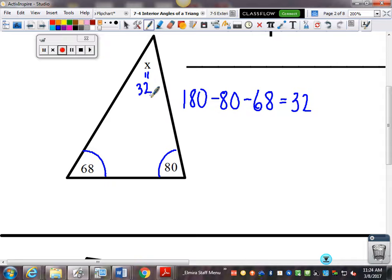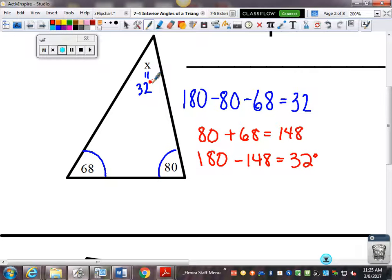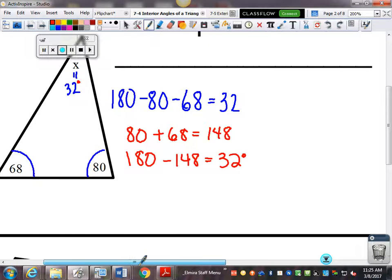Now, some of you do this a different way. Some of you take 80 plus 68, and get 148, and then subtract 180 minus 148, and get your 32 that way. Either way is fine with me. No problem. Just depends on what you want to show in terms of work.